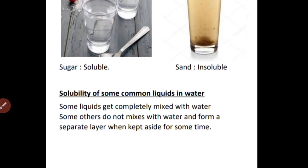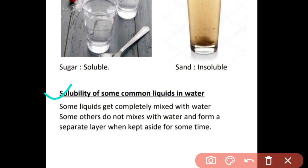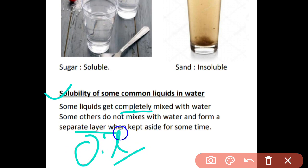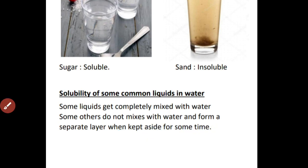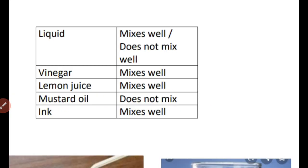Next topic: solubility of some common liquids in water. The liquids which get completely mixed with water are known as miscible liquids. Some other liquids, for example oil, form a separate layer when kept aside for some time — these are known as immiscible liquids. Here is a table showing liquids which can mix well and those which cannot mix well in water.